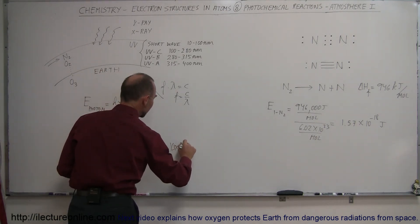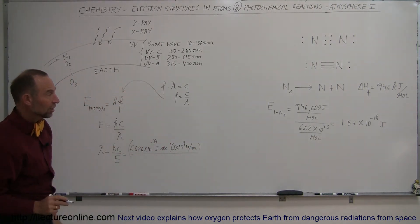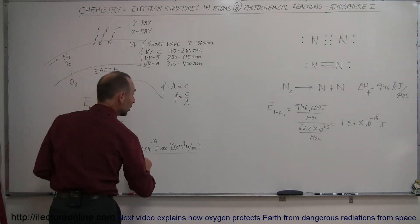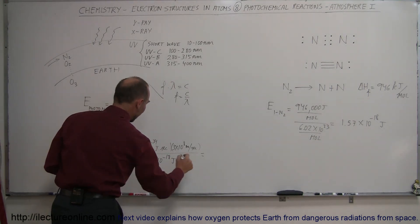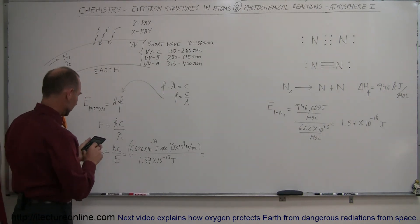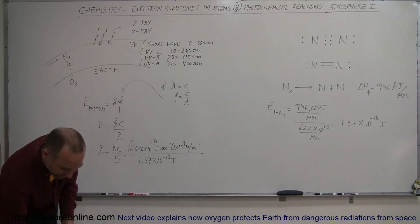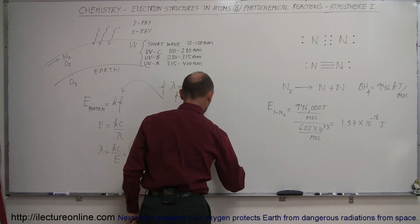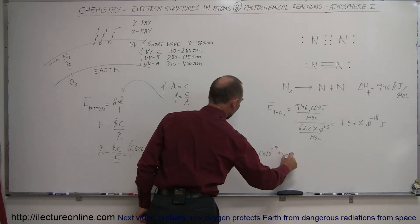C is 3 times 10 to the 8 meters per second, and the energy required is the energy needed to break up a nitrogen molecule, which is 1.57 times 10 to the minus 18 joules. That will tell us what kind of wavelength is required in that photon. So we have 6.626e-34 times 3e8 divided by 1.57e-18, and we get 126.6 nanometers. This equals 126.6 times 10 to the minus 9 meters.